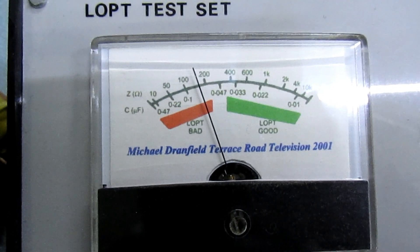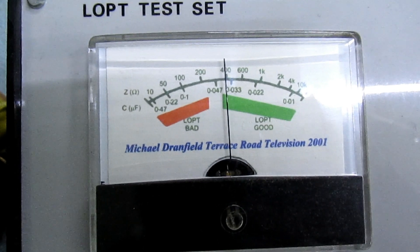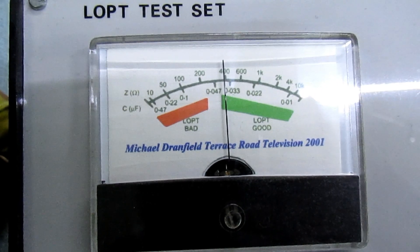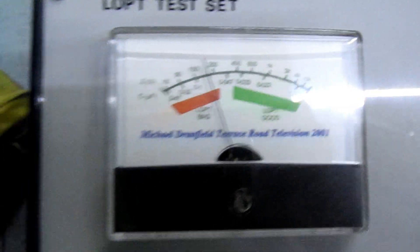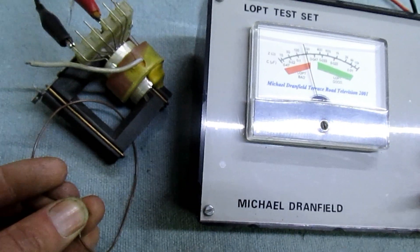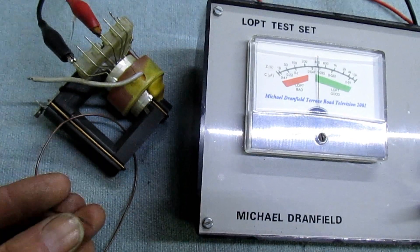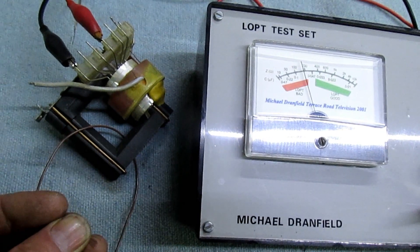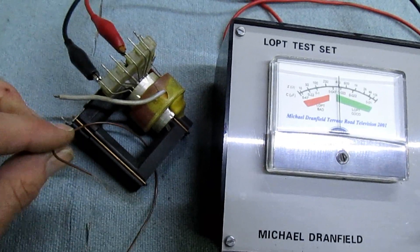And touch them together, and suddenly it becomes bad. So that's the difference that just one single shorted turn can make in an inductor or transformer. When it's open, it's good. One shorted turn, it drops to bad, and that's just a single piece of wire wrapped around the limb of the transformer.